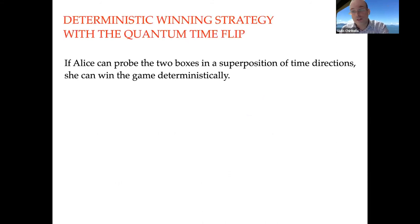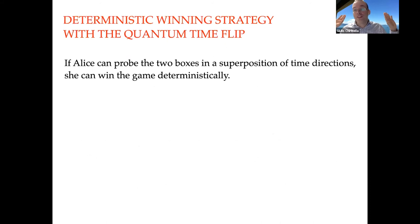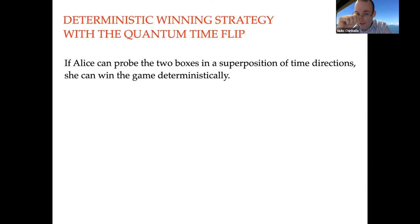It is quite easy to show that if Alice has access to the quantum time flip — this bidirectional access to each of the two boxes — she can win the game deterministically, in the idealized limit where everything is perfect and the gates are perfectly unitary.